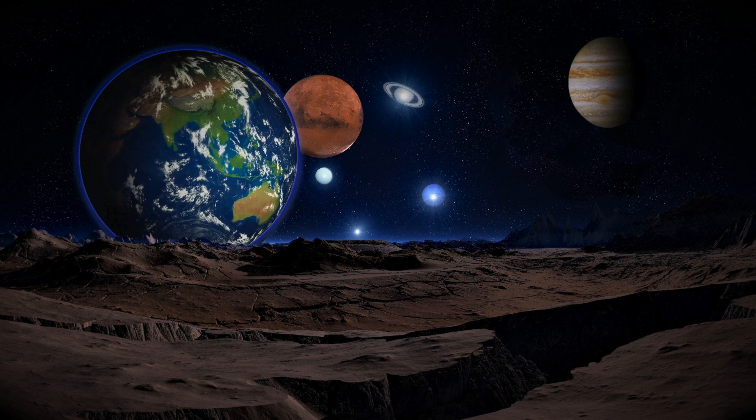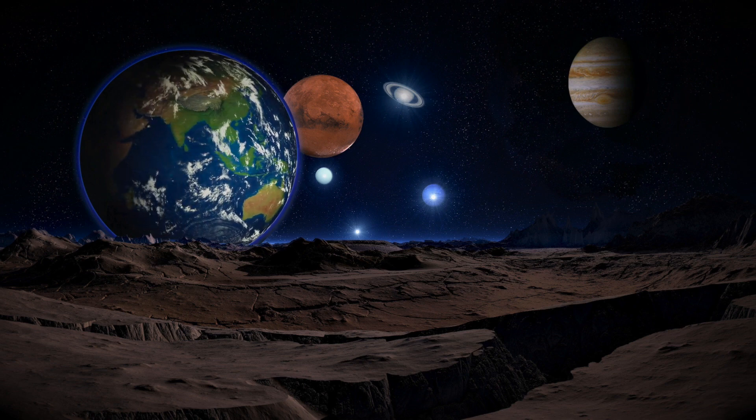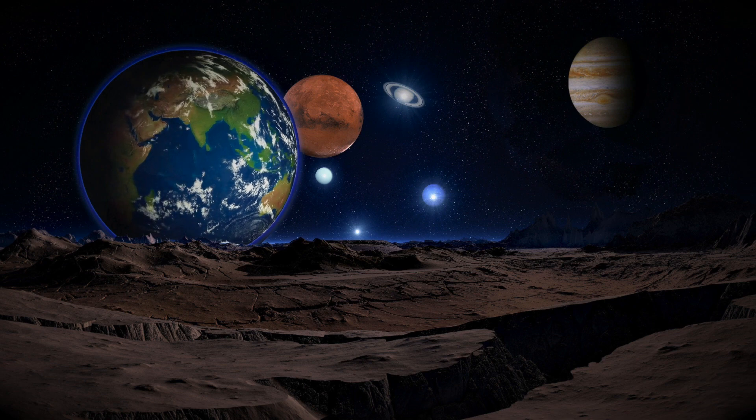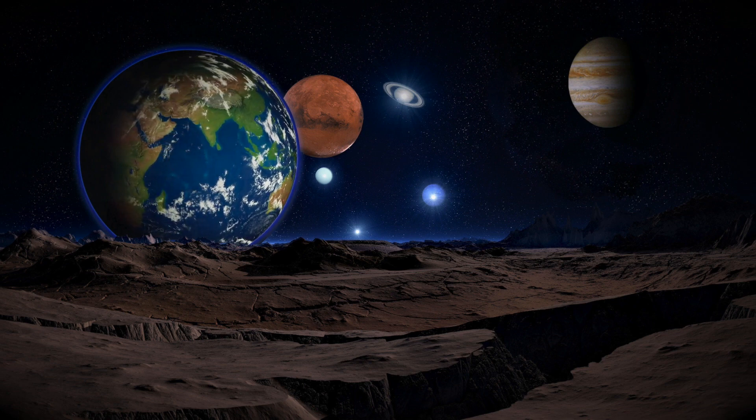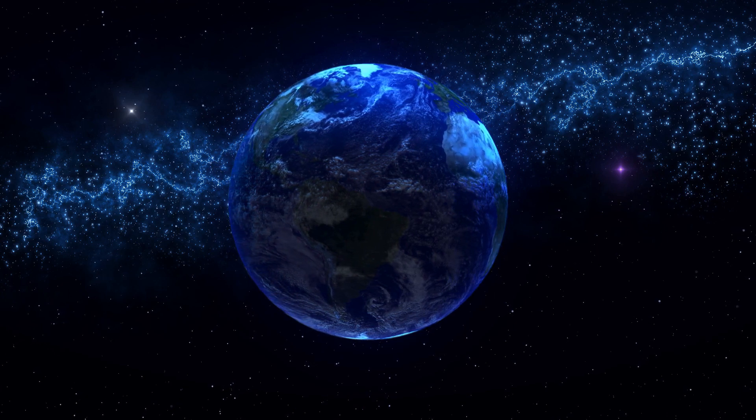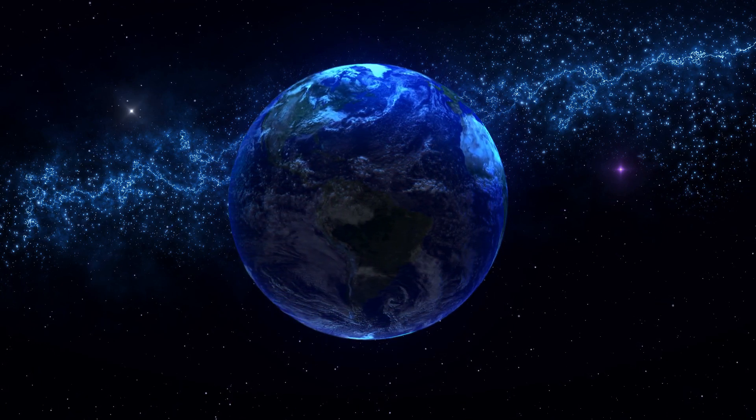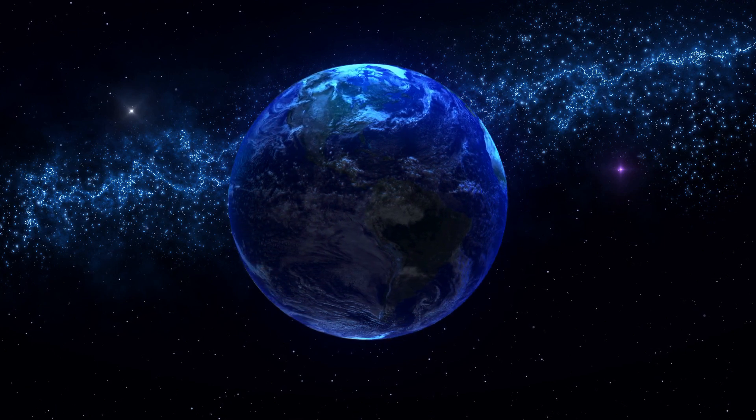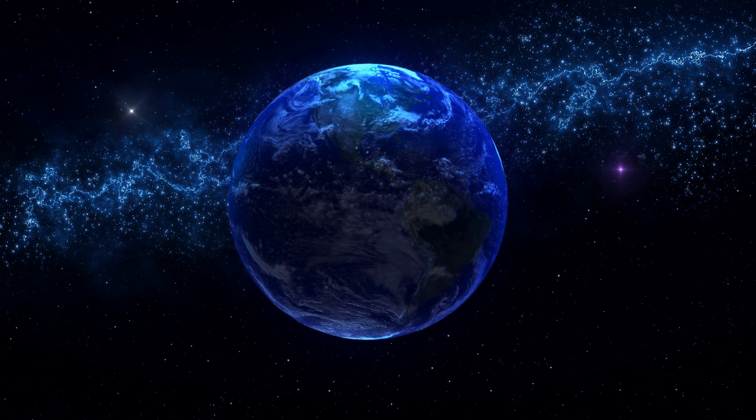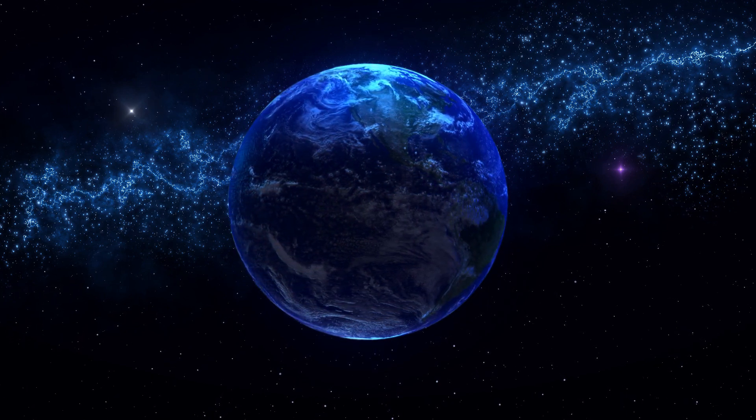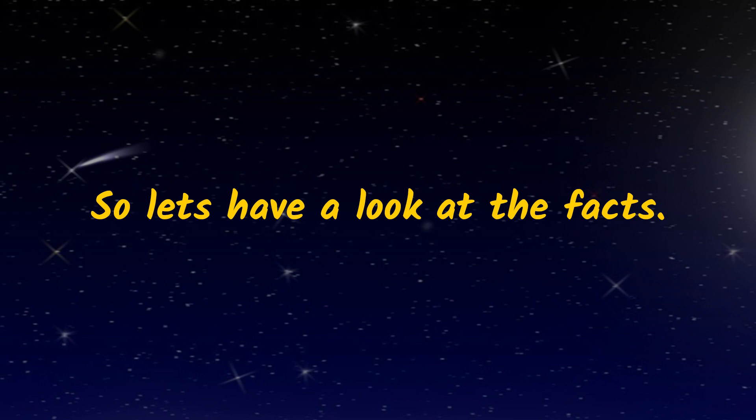Earth. Earth, our home planet, is the third planet from the Sun and the only place we know of so far that's inhabited by living things. While Earth is only the fifth largest planet in the solar system, it is the only world in our solar system with liquid water on the surface. Just slightly larger than nearby Venus, Earth is the biggest of the four planets closest to the Sun, all of which are made of rock and metal. So let's have a look at the facts.